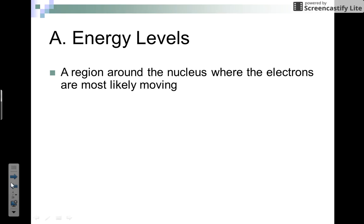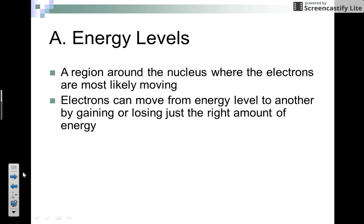When we think of an energy level of an atom, this is the region of space around the nucleus where the electrons are most likely to be moving. The electrons can move from one energy level to another by gaining or losing just the right amount of energy.